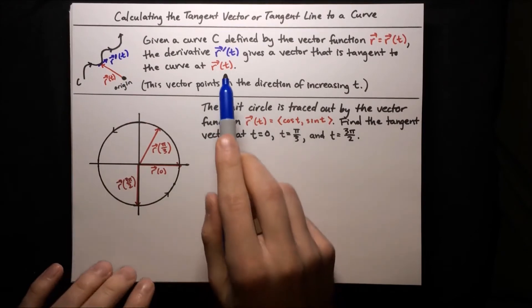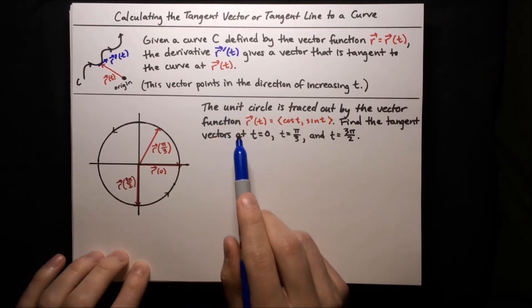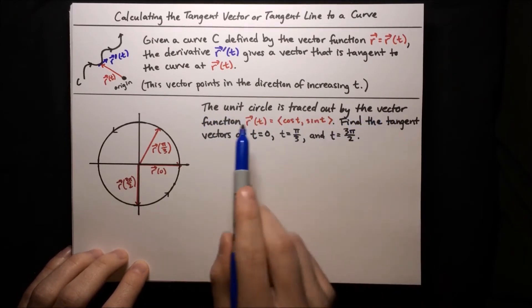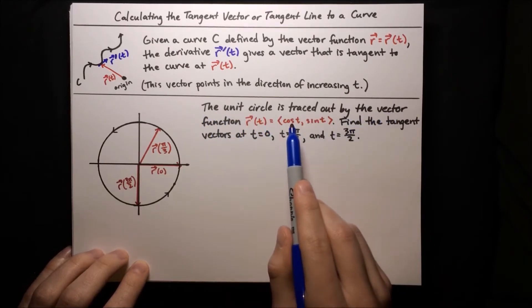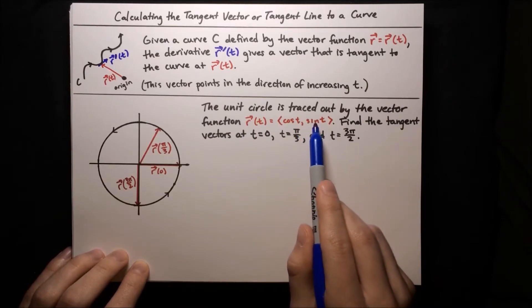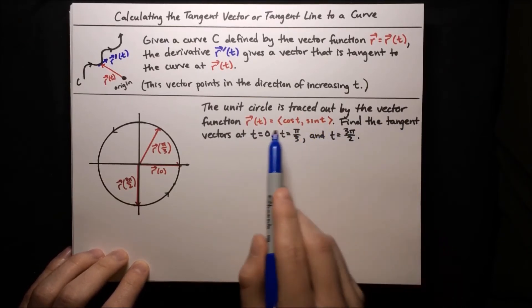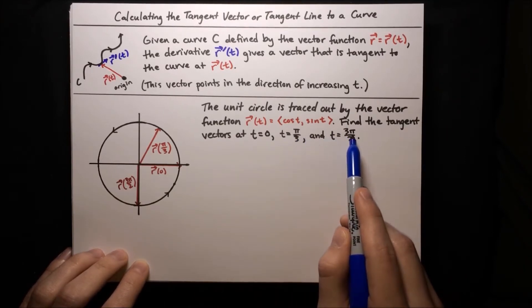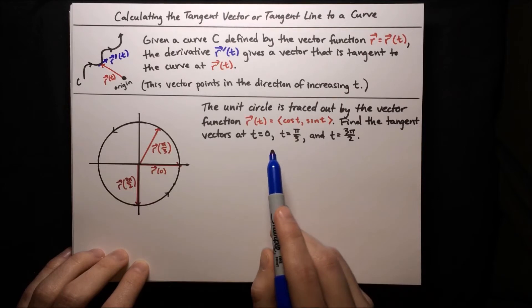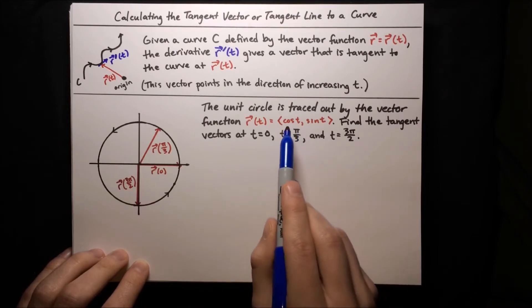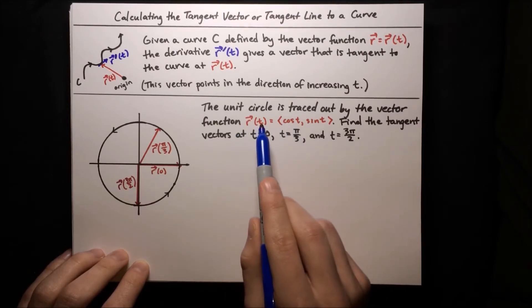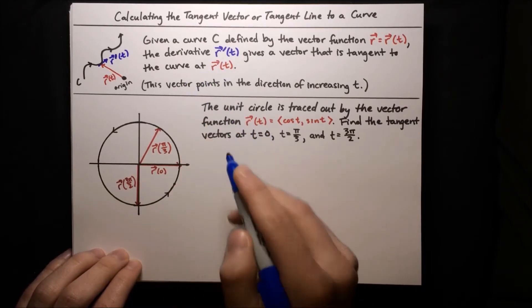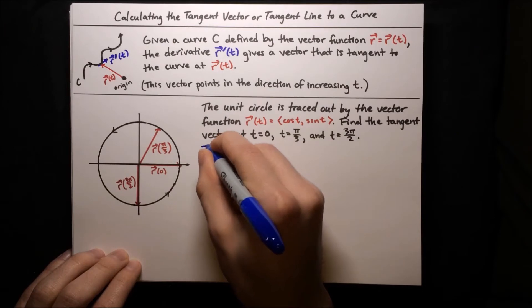Now that we know the big idea, let's put it to use in an example. In this example, the unit circle is traced out by the vector function r of t equals cosine of t, sine of t. We want to find the tangent vectors at t equals 0, pi over 3, and 3 pi over 2. How do we find the tangent vector to this curve at any point t? Remember, all we have to do is differentiate — we just need to find r prime of t.